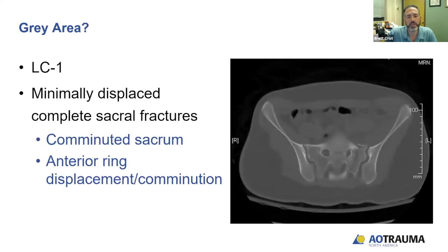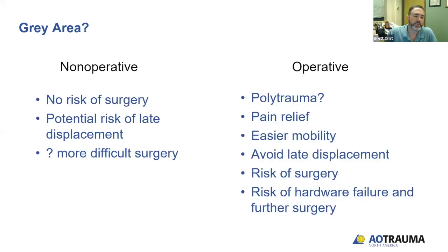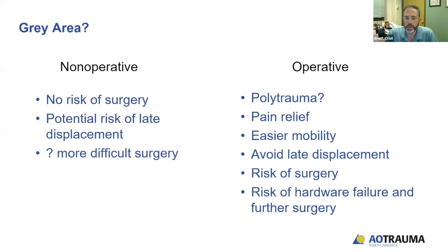This is a minimally displaced LC1 with a complete sacral fracture. The CT scan shows the sacrum does have some anterior comminution. The benefits of non-operative management are obviously avoiding the risk of surgery. The potential risk is late displacement, which can make surgery more difficult. The benefits of operative management include early weight-bearing in polytrauma patients, potential pain improvement, and avoiding late displacement. However, there are risks including hardware failure and further surgery.